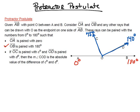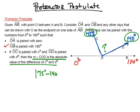So if we're looking at the protractor, ray OA is at zero degrees, ray OC is at 75 degrees, ray OD would be at 140 degrees, and finally OB would be at 180 degrees. Now here's what this postulate says: we can find the measure of this angle using these two measures. The measure of angle COD is going to be the absolute value of the difference of C degrees and D degrees. So basically, we're going to take the absolute value of 75 degrees minus 140 degrees.